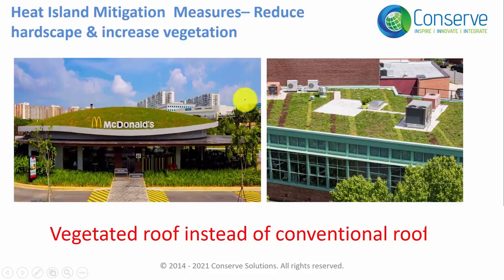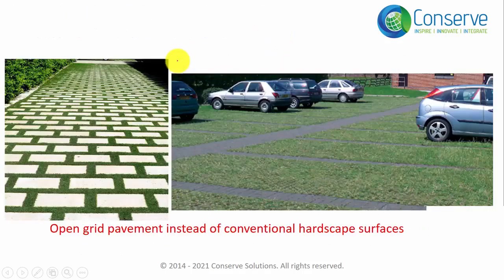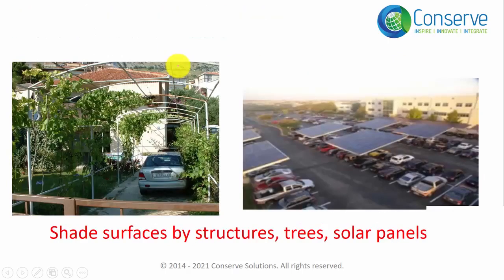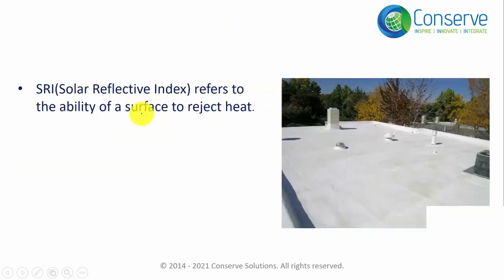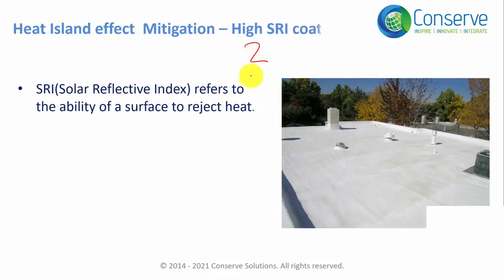Heat island effect can be mitigated by three strategies: number one, reduce hardscape area and increase vegetation; number two, shade hardscape surfaces; and number three, use high SRI coating.